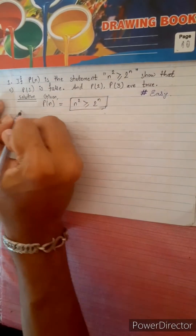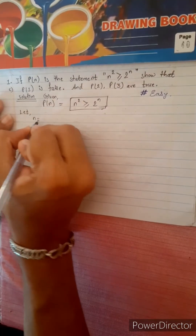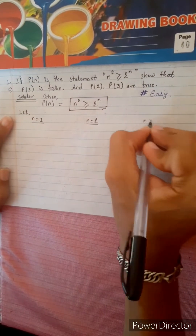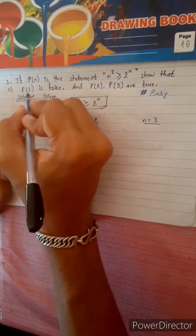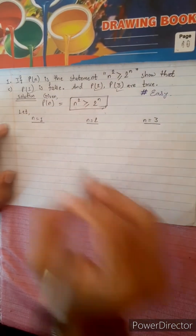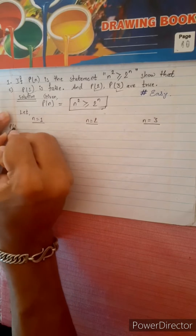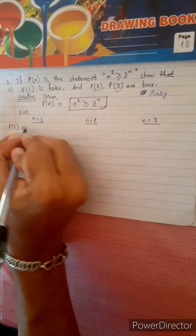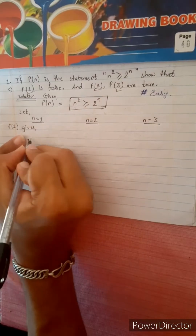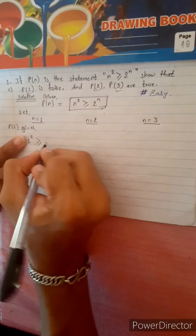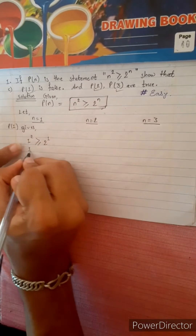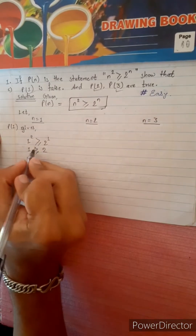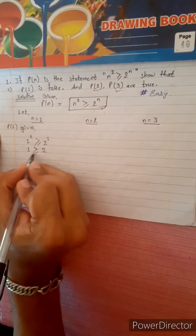Let n equals to 1, n equals to 2, n equals to 3. P1, P2, P3. P1 gives: 1 squared is greater than or equal to 2 power 1 — that is, 1 is greater than or equal to 2. This is false.